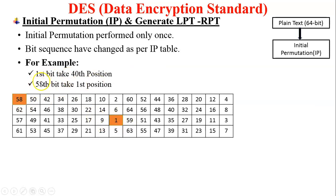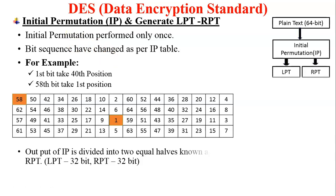You can see the 58th bit takes the first position and the first bit is changed to the 40th position — permutation means transposition, changing the location of the given bits. The output of the IP is divided into two equal halves as LPT and RPT. IP is divided into two parts: LPT and RPT. The size of the initial permutation is 64 bits, and LPT and RPT are divided into the same size blocks — 32-bit LPT and 32-bit RPT.